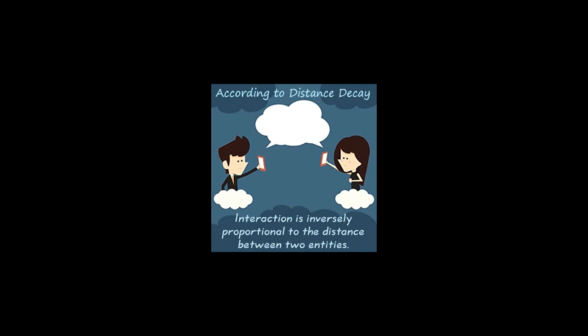Spatial interaction is yet another phenomenon of distance decay. This term was given by Ullman, a geographer from America. It is the flow or movement of people, resources, information, labor, and services between geographical areas. This increases interactivity and interdependence between these geographical regions.